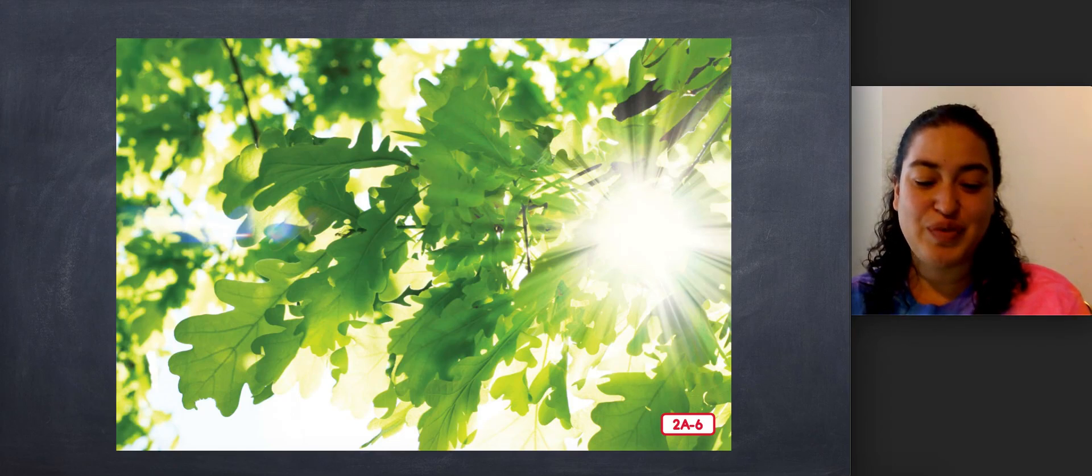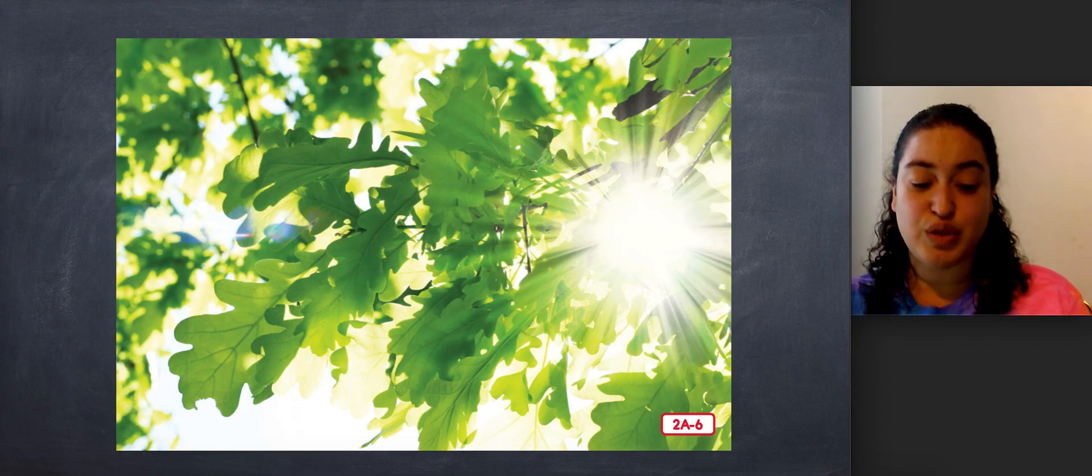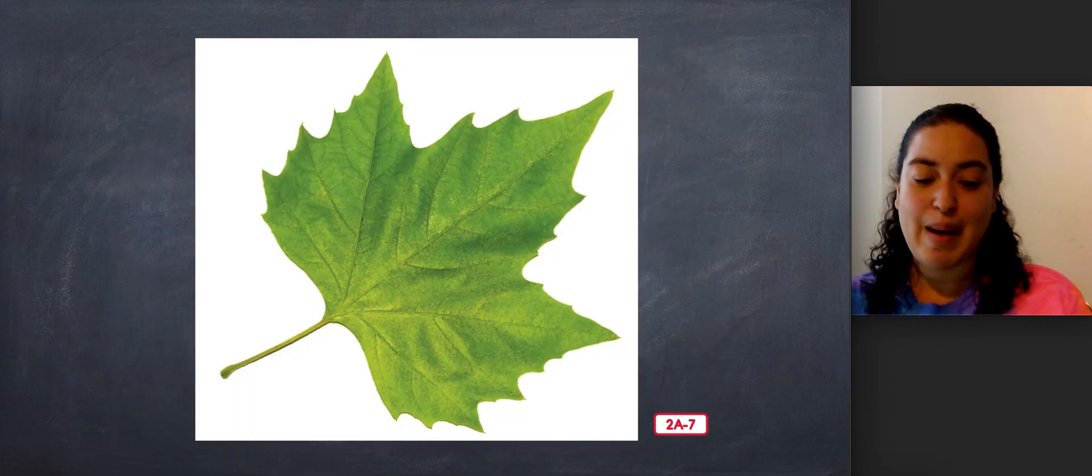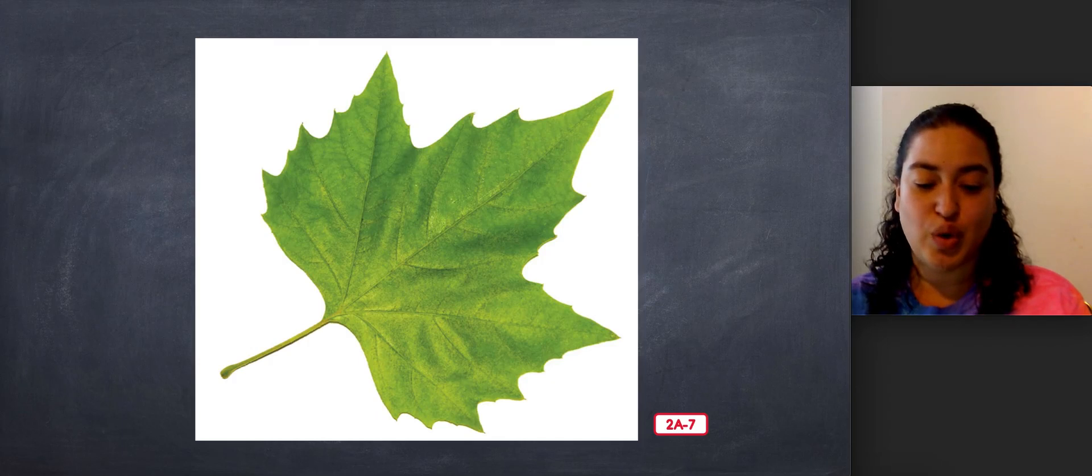The leaf uses the light to turn the water and air already in the plant into food for the rest of the plant. Do you remember earlier that we said the roots and stem of a plant move water and nutrients from the soil to other parts of a plant, such as the leaves?